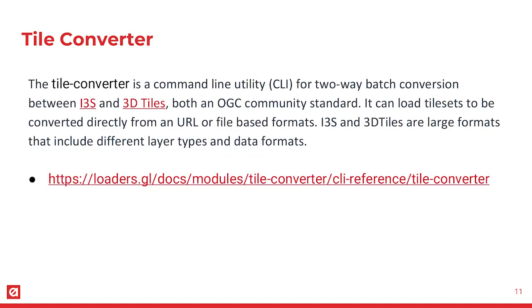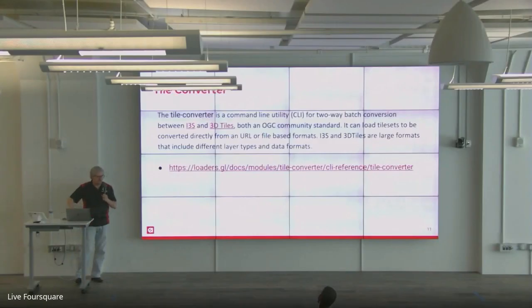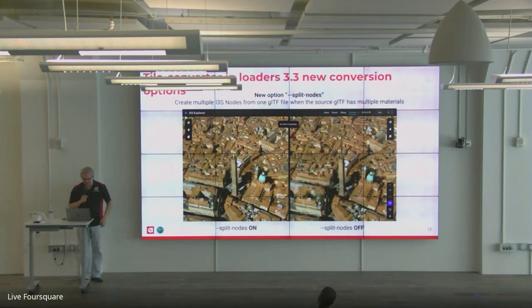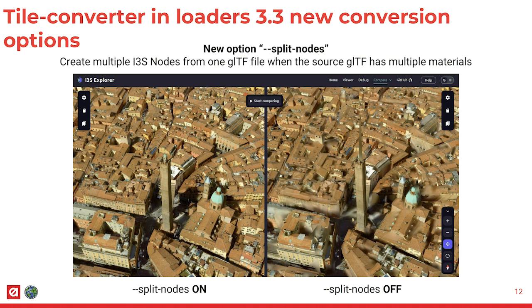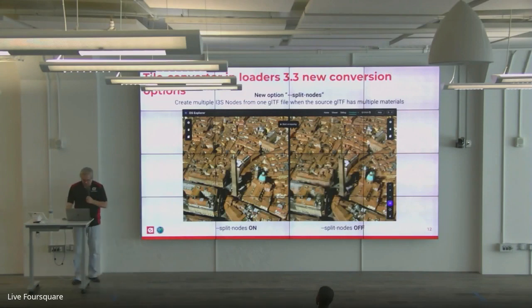I already mentioned tile converter — a very powerful tool that we keep improving. You can go to the loaders.gl docs, modules, tile converter. There's documentation on how to use it; it's pretty straightforward. For loaders 3.3, we added a split nodes option so we can support GLTF a little bit better. You can see on the map with split nodes on, this building was missing some texture — that's one of the features we fixed and added in 3.3.